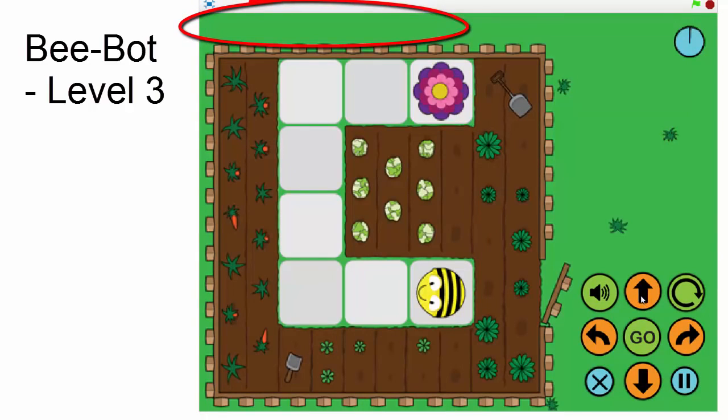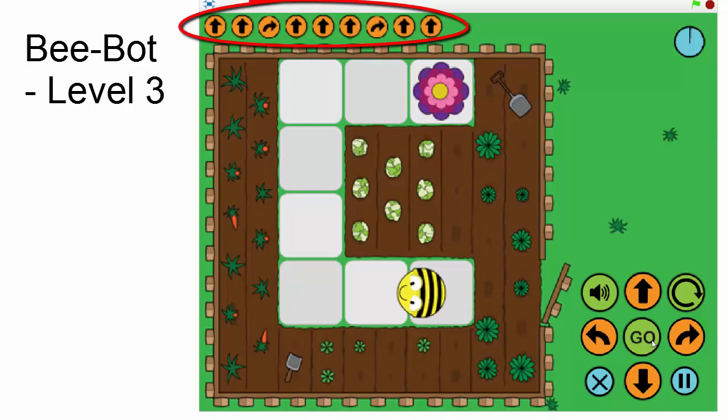At this point in the course, allow students to play with this game through trial and error. Point out how it keeps track of steps and how this is an example of decomposition of the problem.